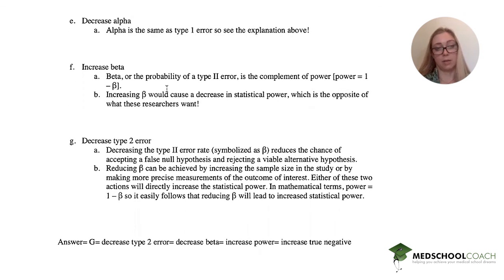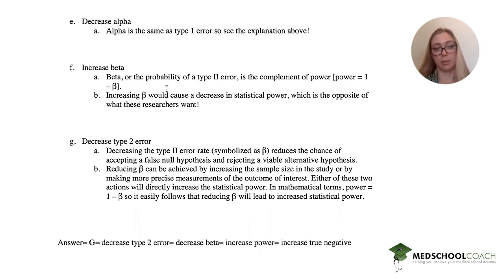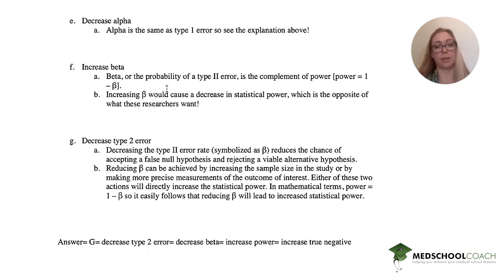Awesome. So the answer is to decrease type 2 error because that decreases beta, which increases power.